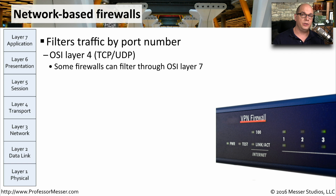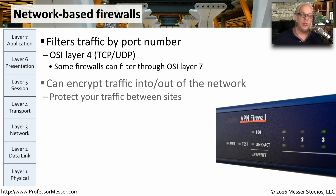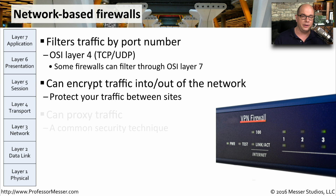We've traditionally used these firewalls to allow and disallow traffic based on a TCP or UDP port number, but these newer, more modern firewalls can identify applications going over the network and allow you to set priorities and permissions based on the application type itself. You can often also use network-based firewalls to encrypt traffic between two firewalls, so if you have two locations, you can send data back and forth and encrypt everything going between one site and the other.